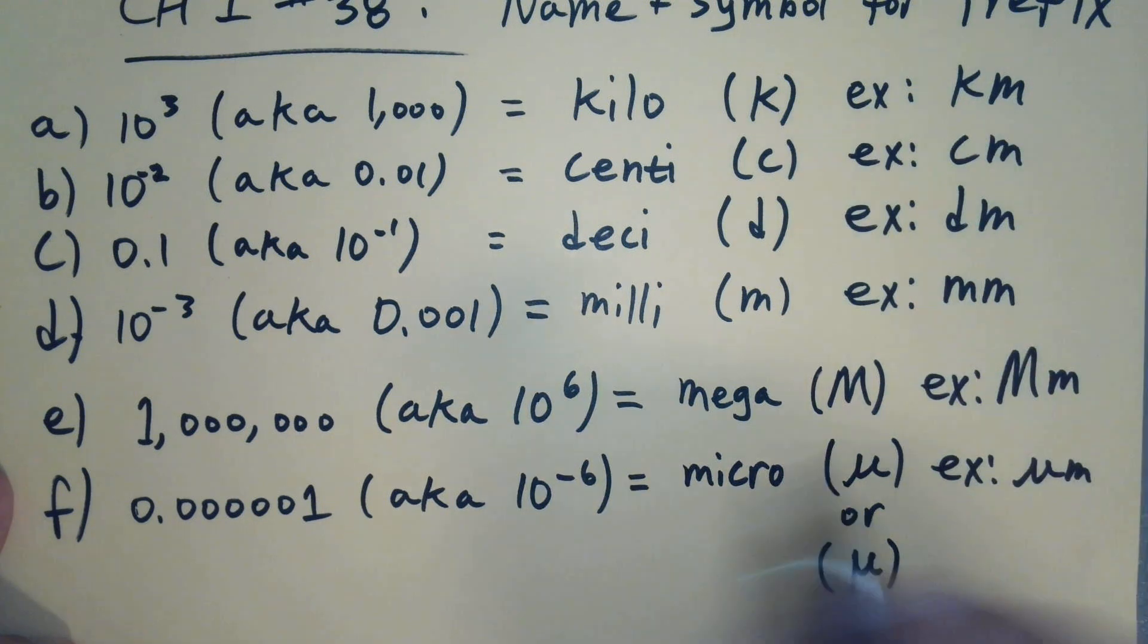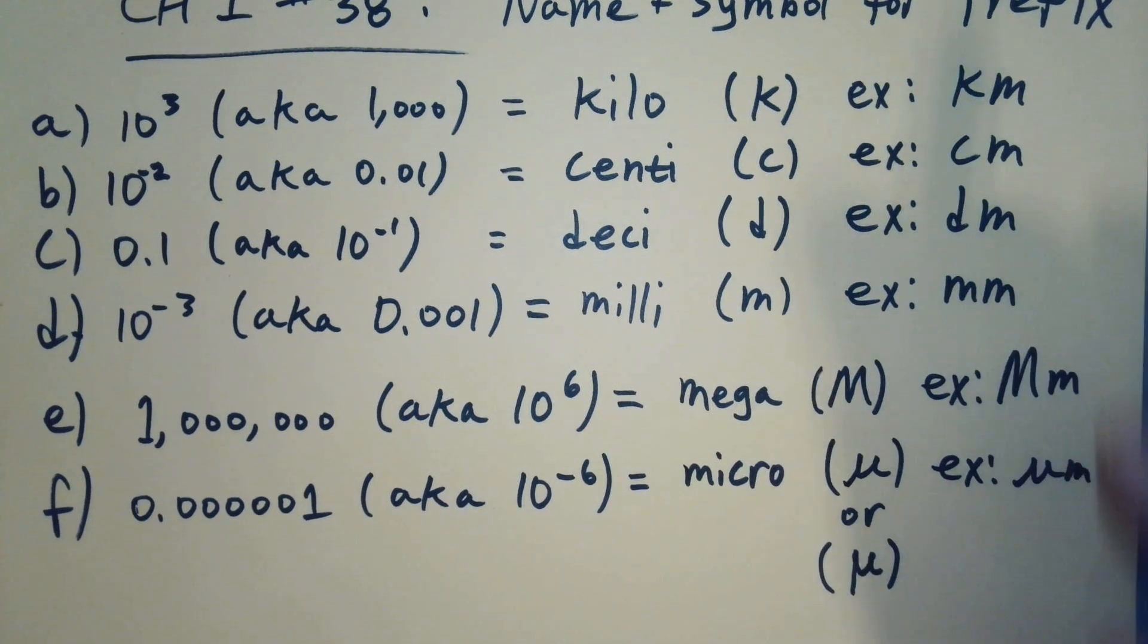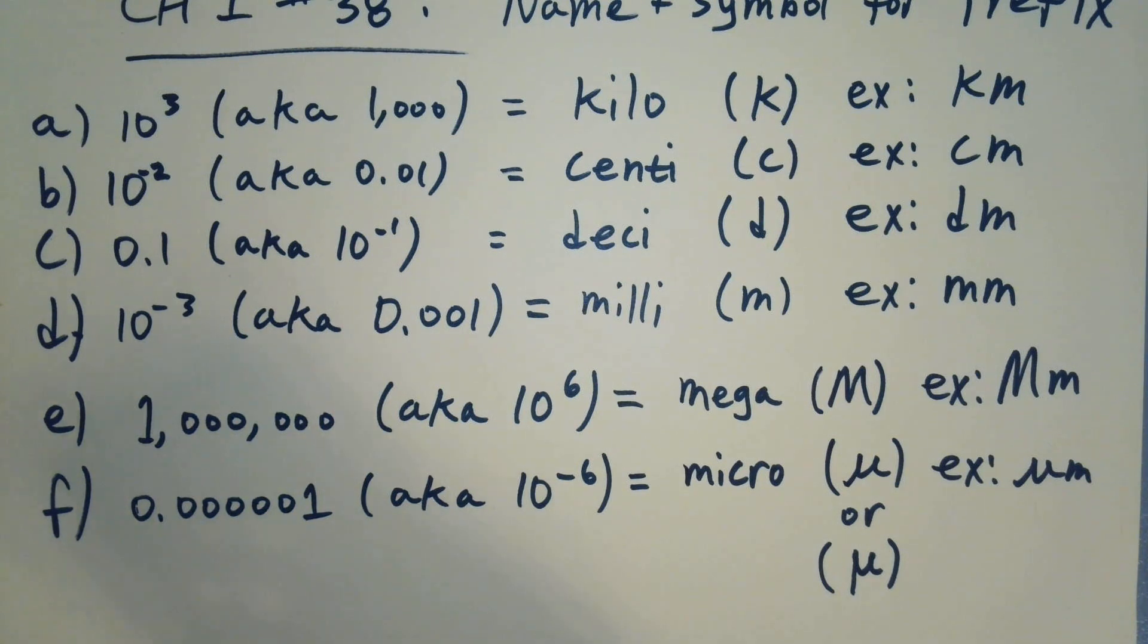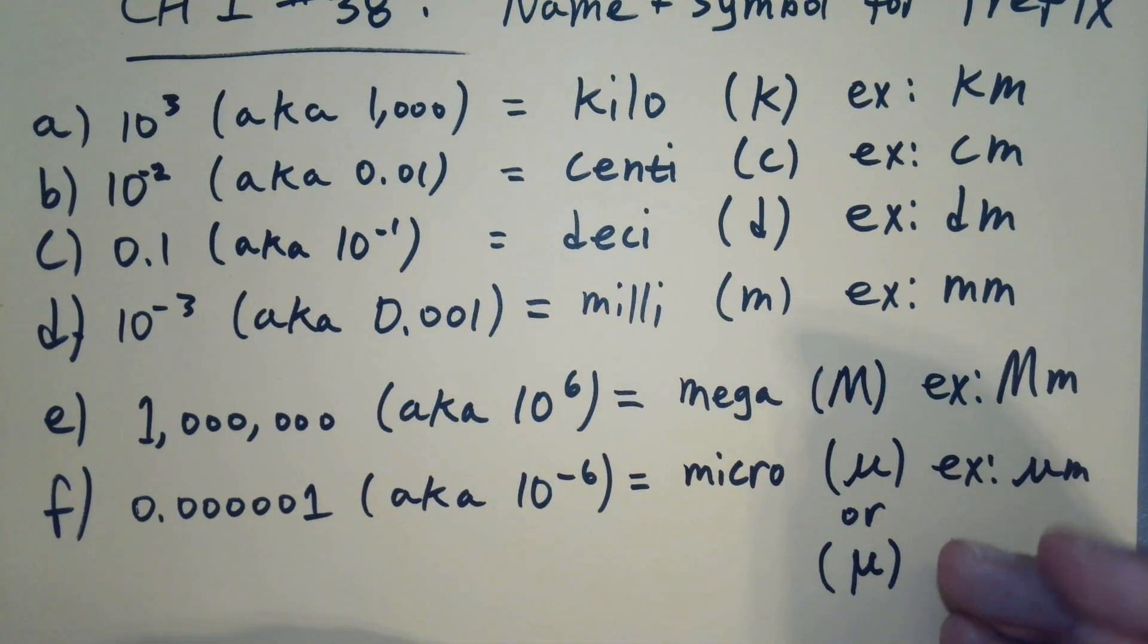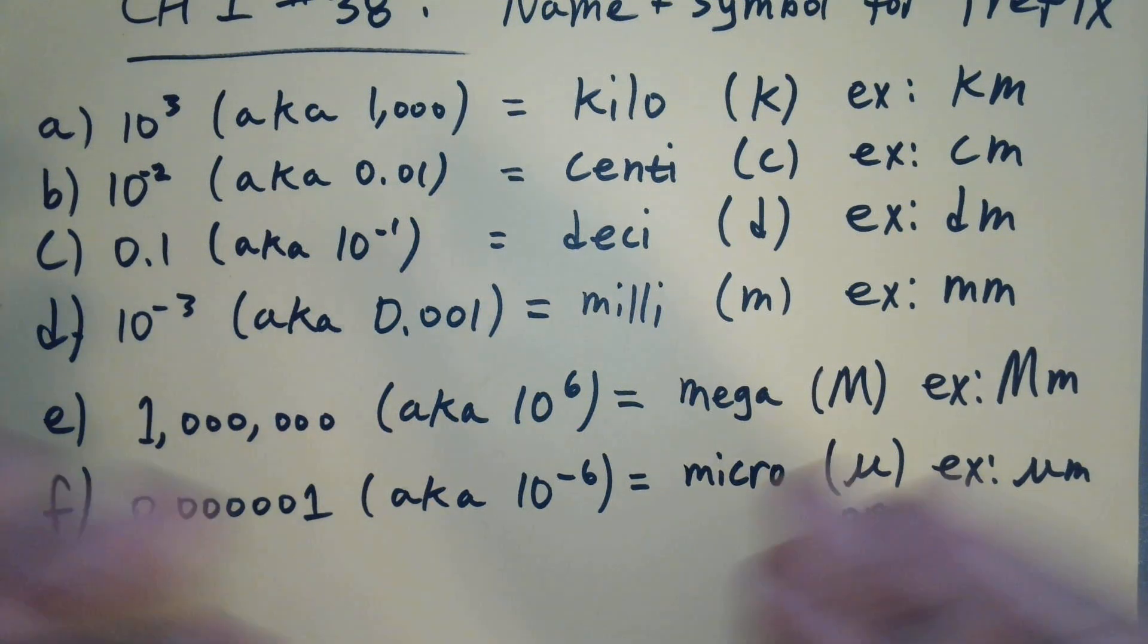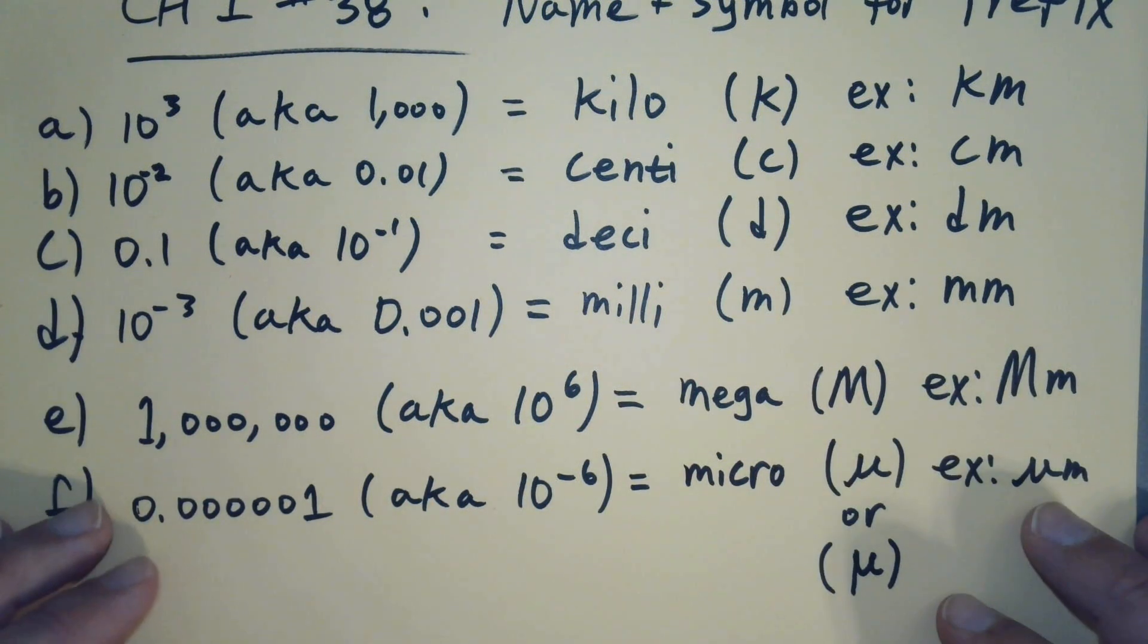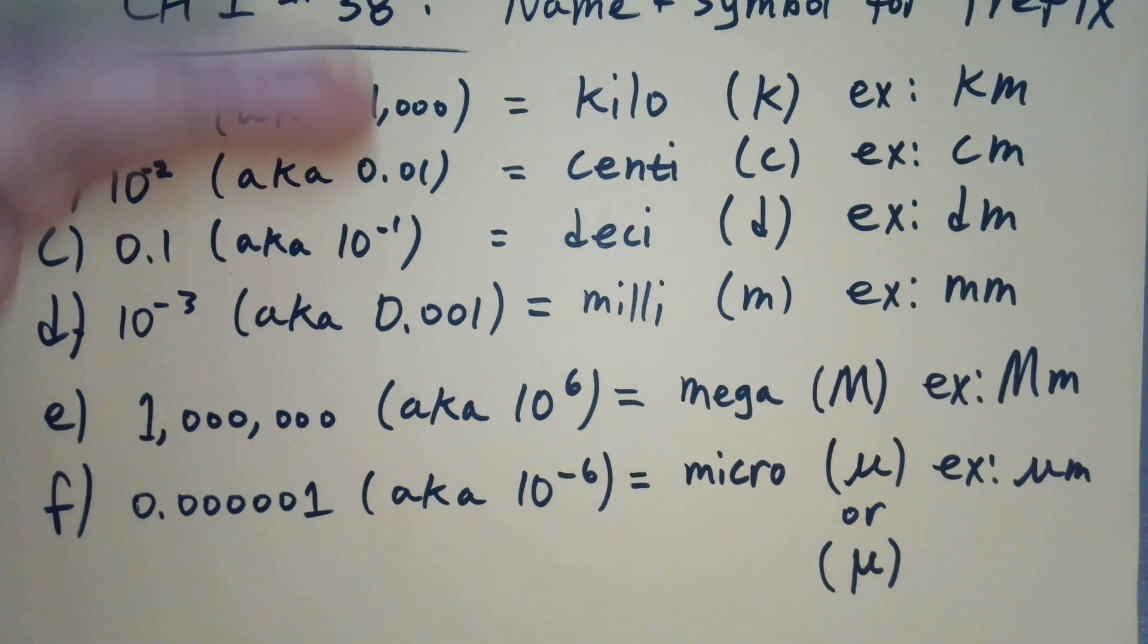So that's it, that's the symbols that were presented here and the names. There are others. It keeps going up and down. You've got nano—like a nanometer, that'd be one billionth of a meter. That's important because that's kind of the scale of atoms. You start getting an atomic scale, but that wasn't asked about here.